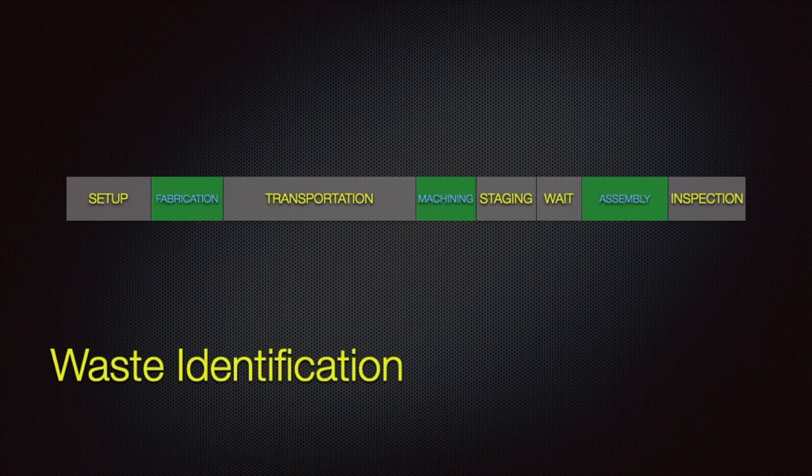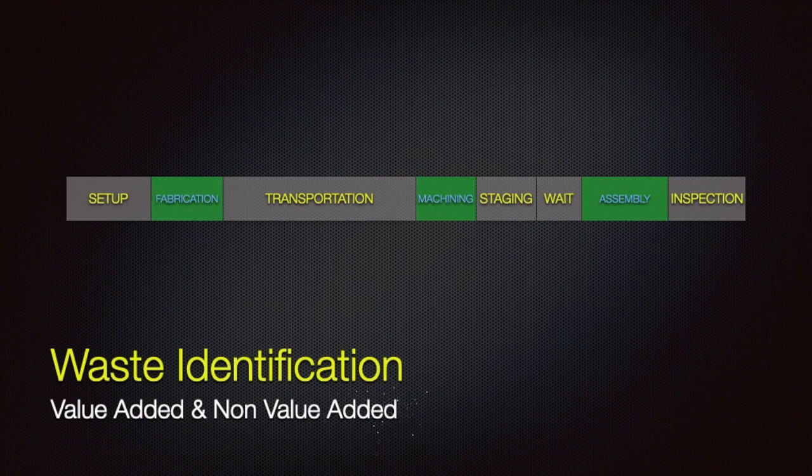Before you can do something about waste or non-value added business processes, you have to be able to identify it. So we will spend the rest of this training, actually, on how to identify waste. And here you can see a timeline of a process that starts. You can see what's set up. And then it works from left to right all the way to the ending operation, which is inspection.